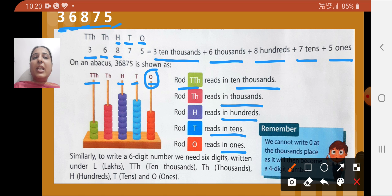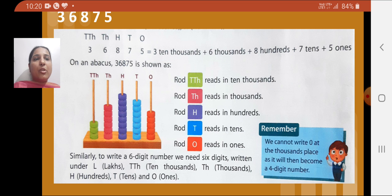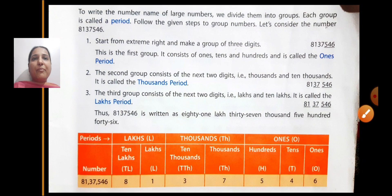Similarly, if it is a six-digit number, we need six digits written under the six place value columns: ten-lakhs, lakhs, ten-thousands, thousands, hundreds, tens, and ones.